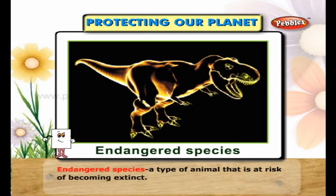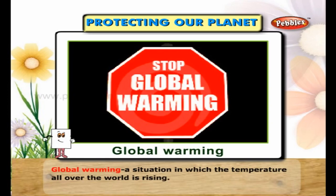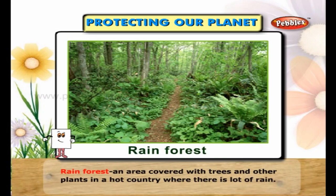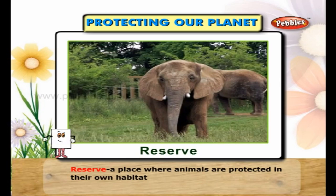Endangered species refers to a type of animal that is at risk of becoming extinct. Global warming is a situation in which the temperature all over the world is rising. A rainforest is an area covered with trees and other plants in a hot country where there is a lot of rain. To save means to stop something from being harmed, destroyed, wasted or used up. A reserve is a place where animals are protected in their own habitat.